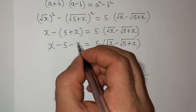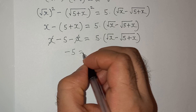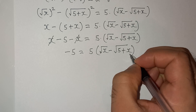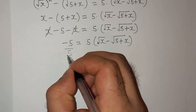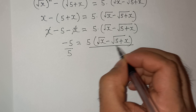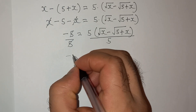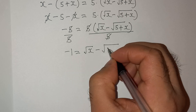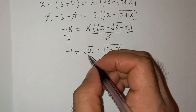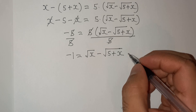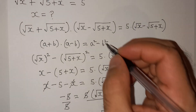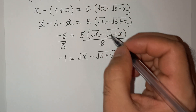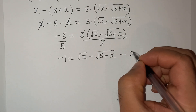Now this +x and -x will cancel, so we have -5 = 5 × (root(x) - root(5 + x)). Let's divide both sides by 5. This gives us -1 = root(x) - root(5 + x). Let's call the original equation number 1, and this derived equation number 2.